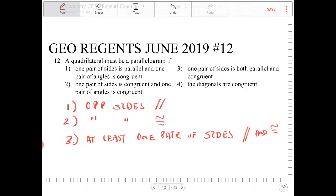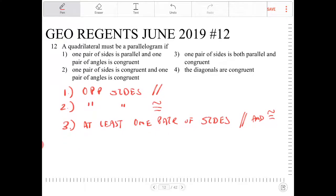So we need one pair of opposite sides. And then four, opposite angles are congruent.